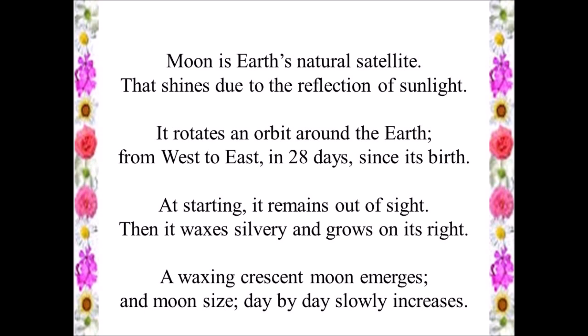At starting, it remains out of sight. Then it waxes silvery and grows on its right. A waxing crescent moon emerges, and moon size day by day slowly increases.